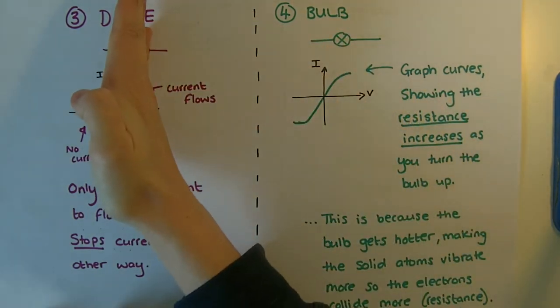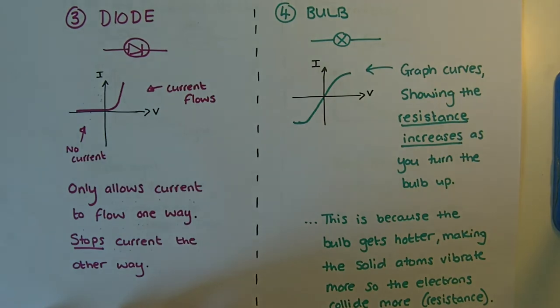Imagine if the current was coming in here, it's being stopped by the diode so it can't go around the circuit.